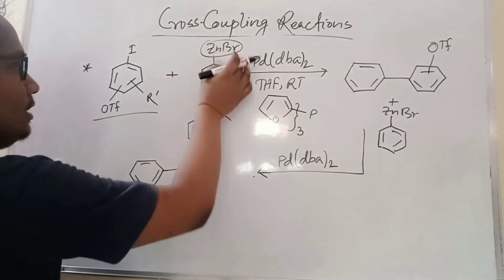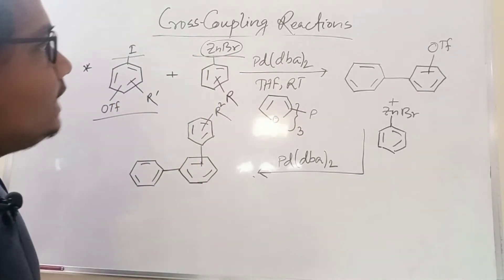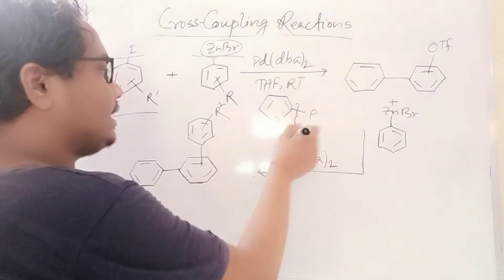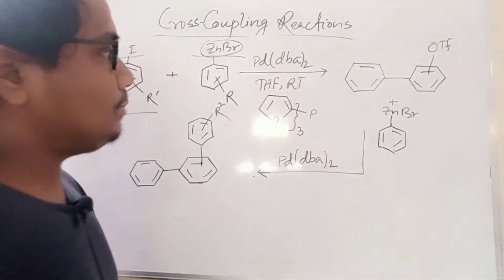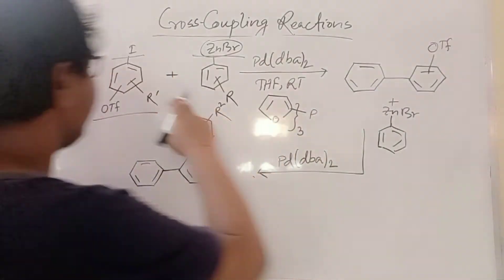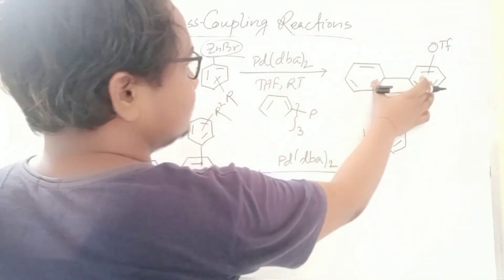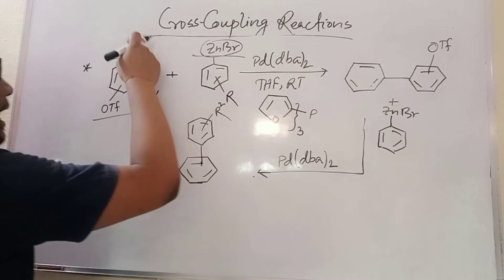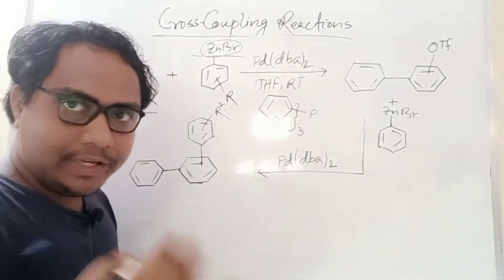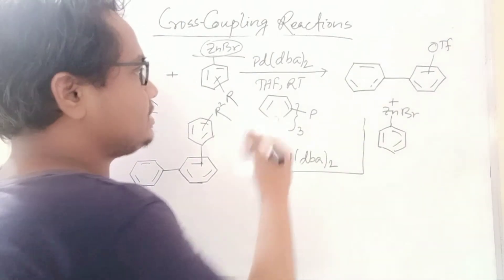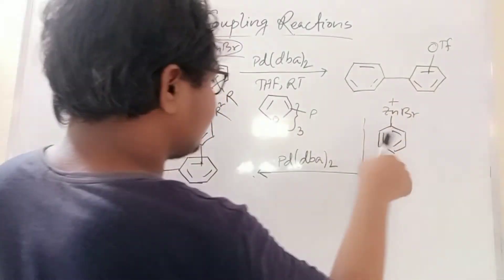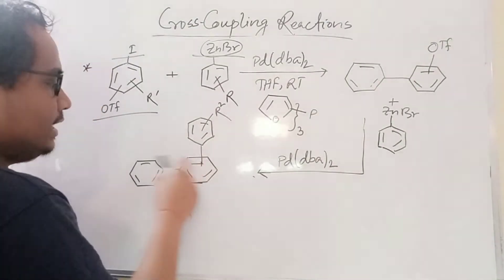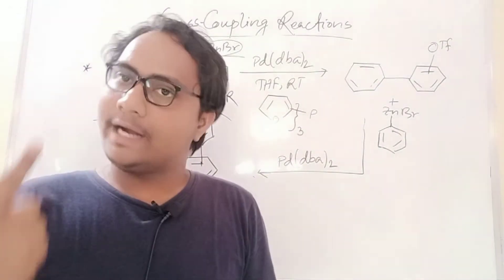Here I use an organometallic reagent like zinc bromide — a zinc-alkyl group — as the organometallic part, and an alkyl halide with palladium DBA (dibenzylideneacetone) and a ligand. In the presence of this ligand, the two portions couple. Using another equivalent — where OTf is present — the reactivity order is: iodine halide couples first, then OTf. So iodine will first couple and then OTf couples with palladium.